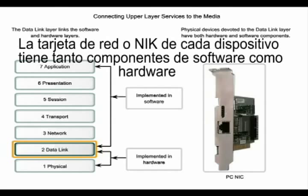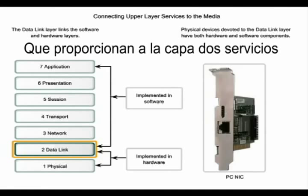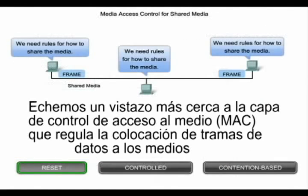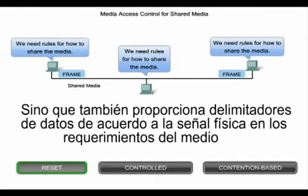The network interface card, or NIC, in each device has both software and hardware components that provide layer 2 services. The media access control sub-layer regulates the placement of data frames onto the media. It also provides addressing and delimiting of data according to the physical signaling requirements of the medium.